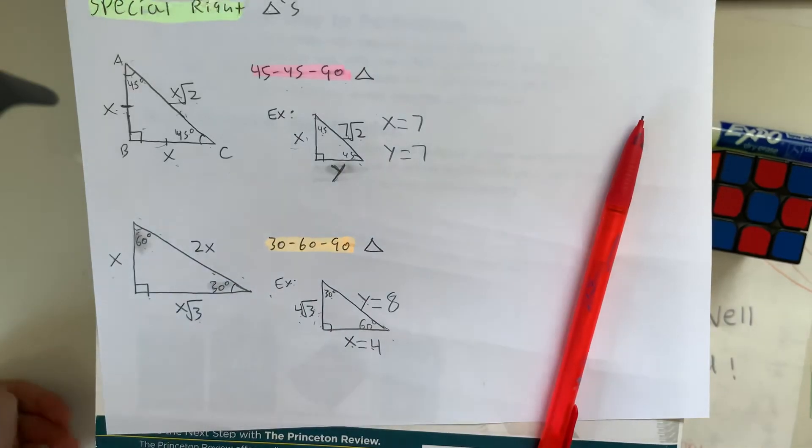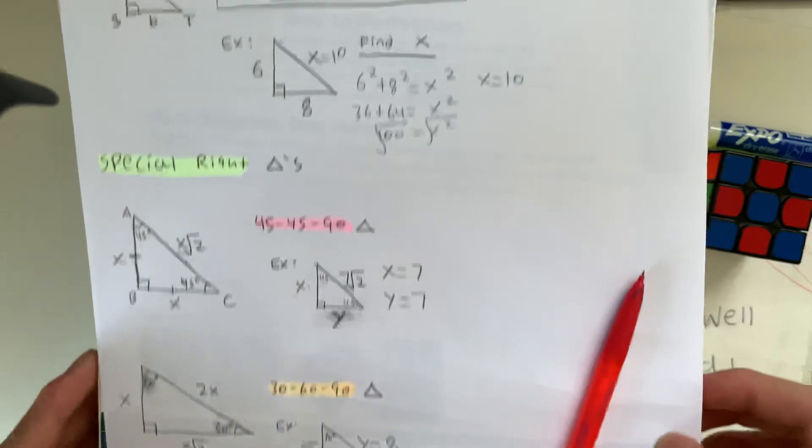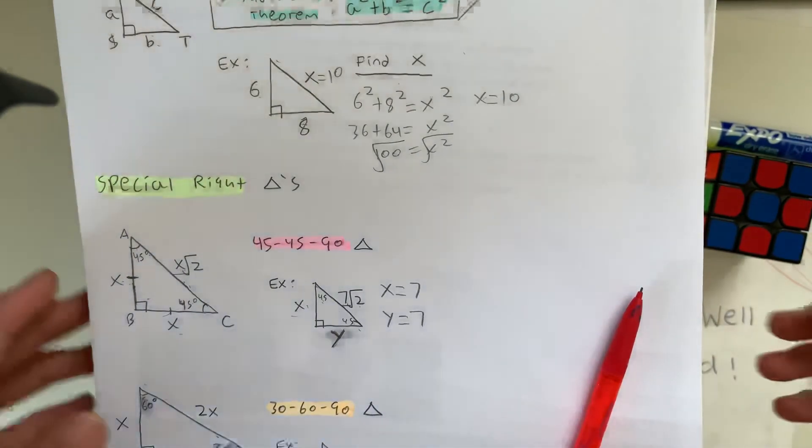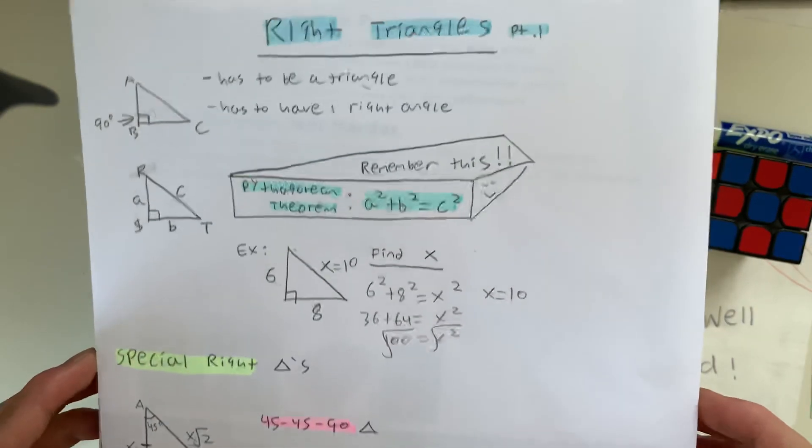And this is going to be pretty important in the SAT, so it's better if you guys memorize the Pythagorean theorem and these two special right triangles. Thanks for watching, guys. I'll see you guys later.